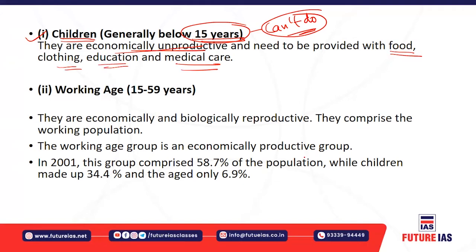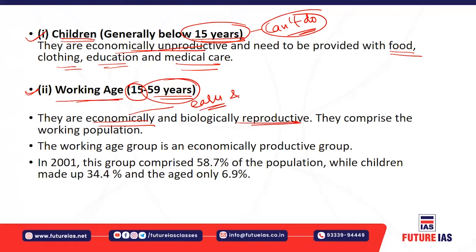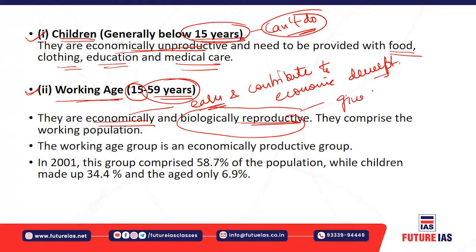The second category is the working age group, from 15 to 59 years. This population is economically productive — they can earn and contribute to economic development. They are also biologically reproductive, meaning they can give birth to babies. This class is called the working population, and they contribute to economic growth and the GDP of the country.